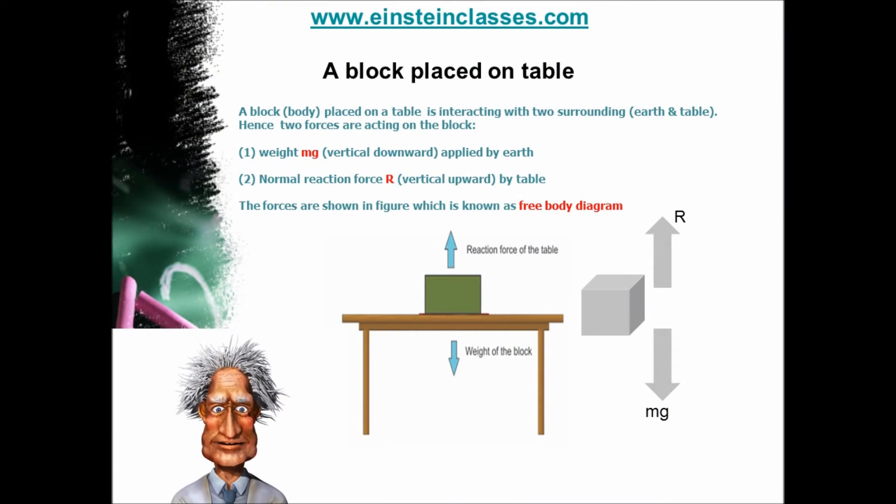This one is a second example. A block is placed on a table. We have to draw the FBD of the block. As you can see, the block is interacting with the plane surface of the table which is applying normal reaction on the block in upward direction because the block is applying a downward force on the table, and hence the table is applying a force equal in magnitude and opposite in direction on the block. This force is known as normal reaction.